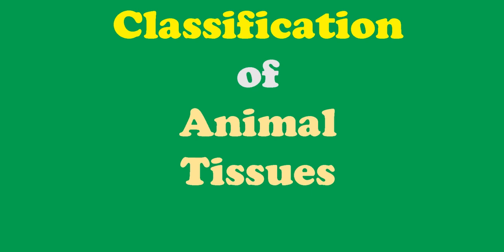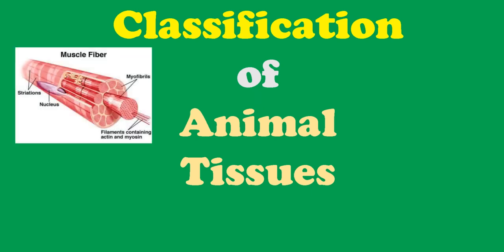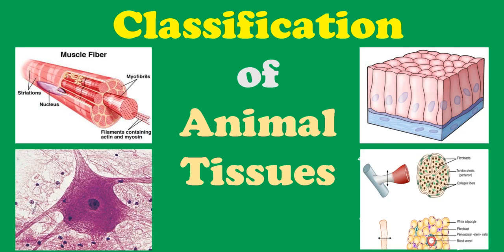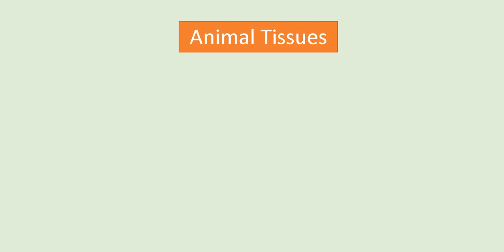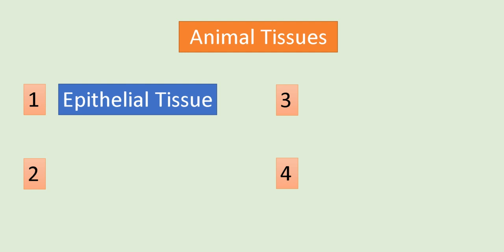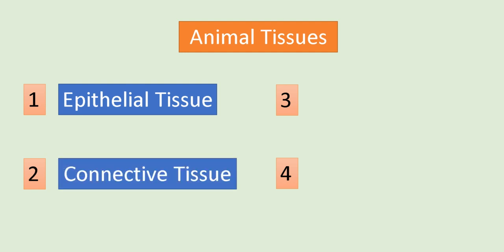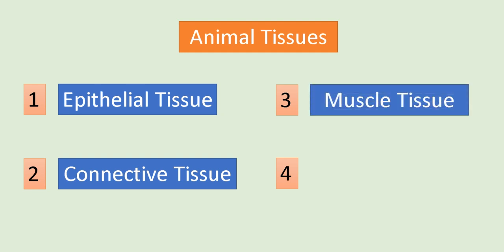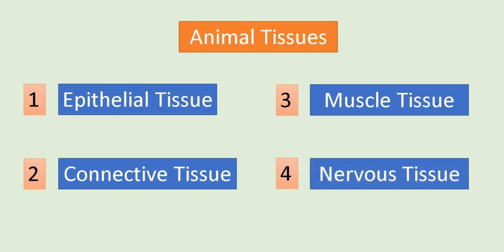Today we will be discussing the classification of animal tissues. Animal tissues are primarily divided into four types: first, epithelial tissue; second, connective tissue; third, muscular or muscle tissue; and fourth, neural or nervous tissue. In each tissue, some subcategories are also present.